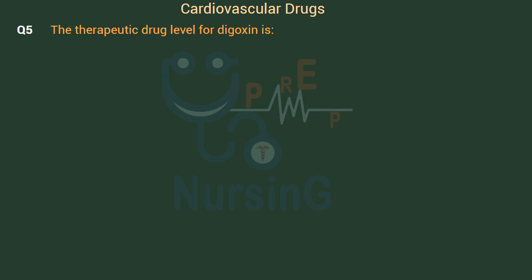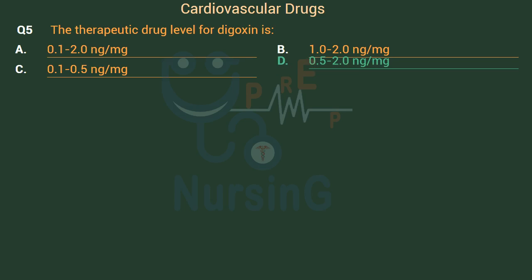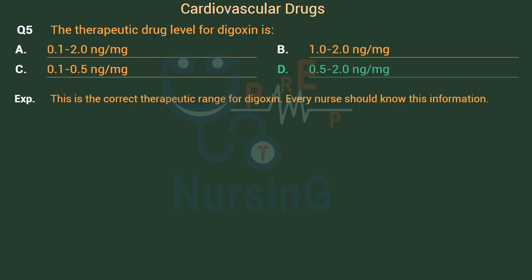The therapeutic drug level for digoxin is: Option A: 0.1 to 2.0 nanograms/mL. Option B: 1.0 to 2.0 nanograms/mL. Option C: 0.1 to 1.5 nanograms/mL. Option D: 0.5 to 2.0 nanograms/mL. Option D, 0.5 to 2.0 nanograms/mL, is the correct therapeutic range for digoxin. Every nurse should know this information.